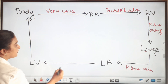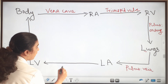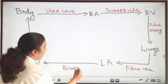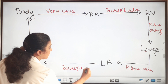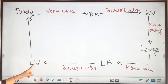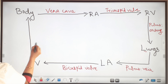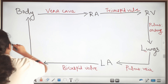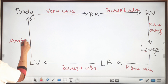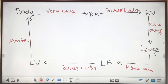From the left atrium, through the bicuspid valve or mitral valve, blood enters into the left ventricle. From the left ventricle, through the aorta, blood enters into the body. These are the blood vessels involved.